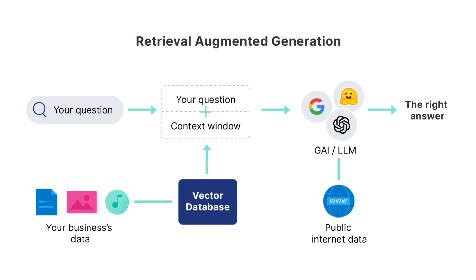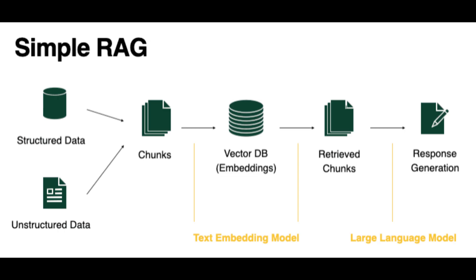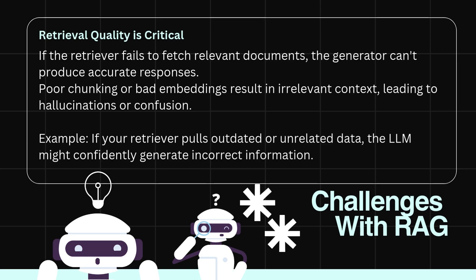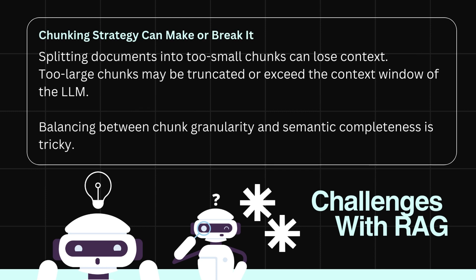Retrieval Augmented Generation is powerful, but it comes with several limitations and challenges. First, retrieval quality is critical: if the retriever fails to fetch relevant documents, the generator can't produce accurate responses. Poor chunking or bad embeddings result in irrelevant context, leading to hallucinations or confusion. For example, if your retriever pulls outdated or unrelated data, the LLM might confidently generate incorrect information.